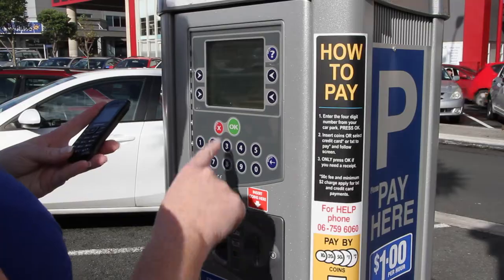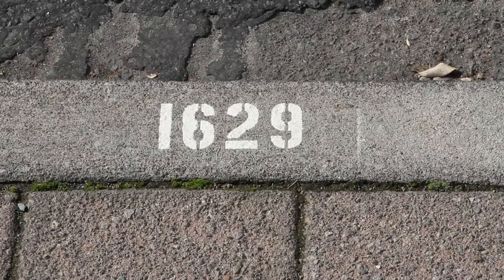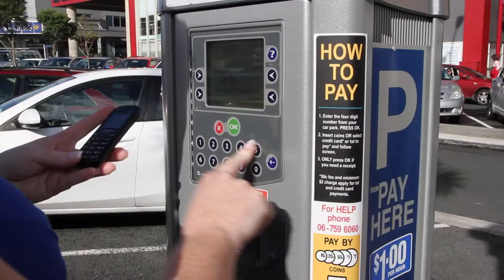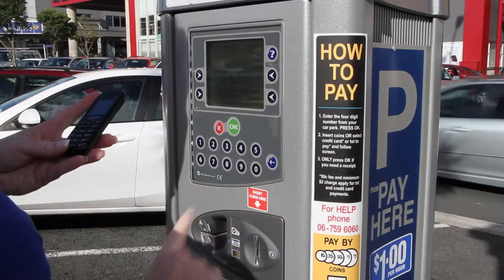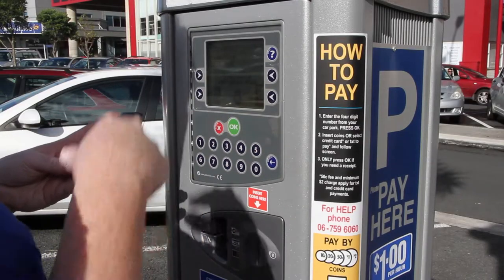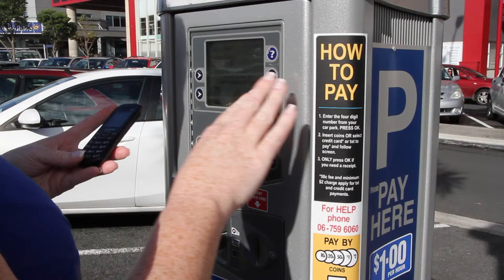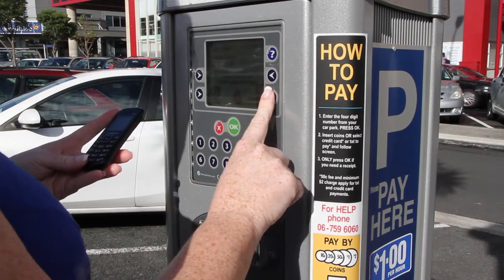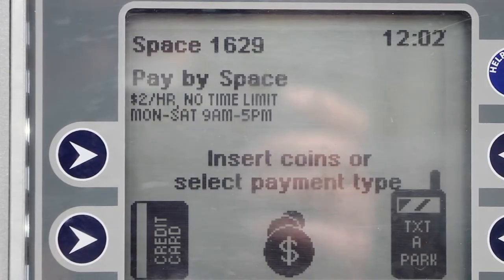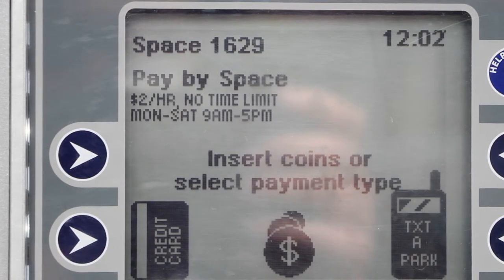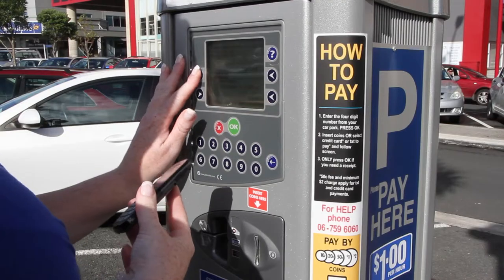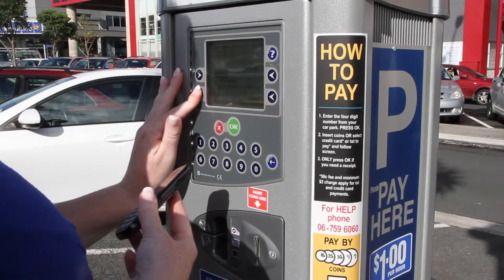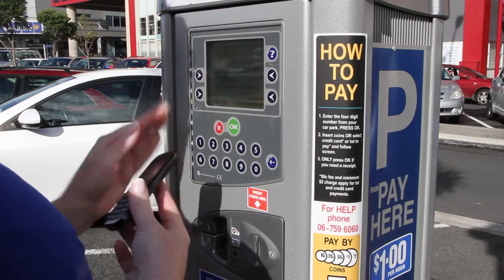Enter my bay number, press OK to continue. On the right hand side I'm selecting text apart, and then on the left hand side I choose the minutes that I want.